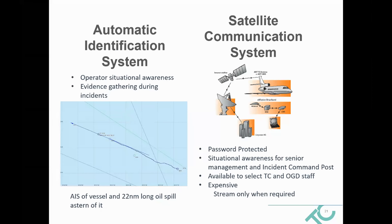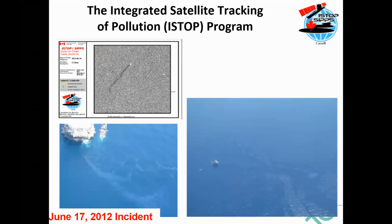We also have the automatic identification system as well as satellite communications — we can share this information in real time. Part of the NASP program that we work in close partnership with is the ISTOP program from Environment and Climate Change Canada, where the Canadian ice service does analysis of satellite imagery from RADARSAT Constellation. When they detect an anomaly on the sea surface, they can task the NASP aircraft to ground-truth and confirm whether the anomaly is a hydrocarbon. This can usually be conducted the same day, with results transmitted back in flight.